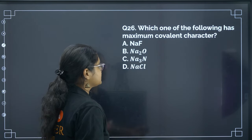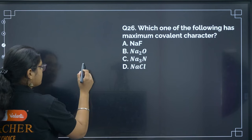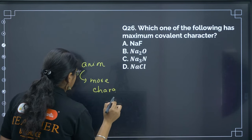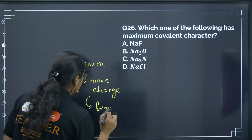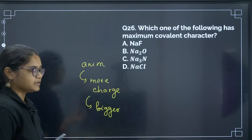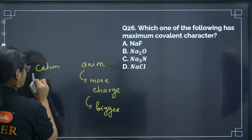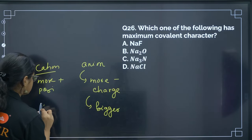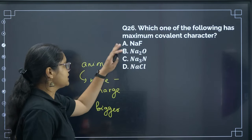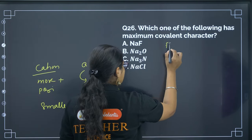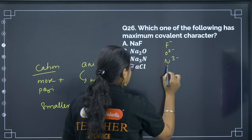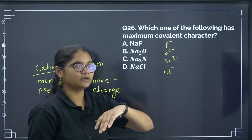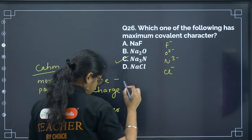Next: which compound has maximum covalent character? For maximum covalent character, the anion should have higher charge and larger size, and the cation should have higher charge and smaller size (Fajan's rules). In all given options the cation is the same. Comparing anions — F⁻, O²⁻, N³⁻, and Cl⁻ — N³⁻ has the highest charge, so it will have the most covalent character. The correct answer is option C.